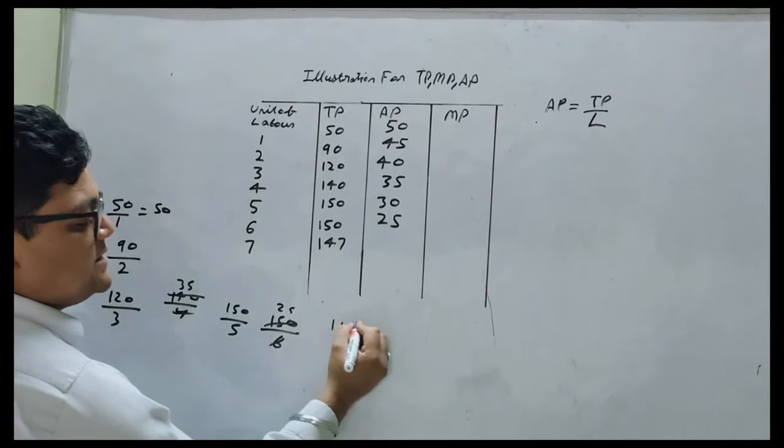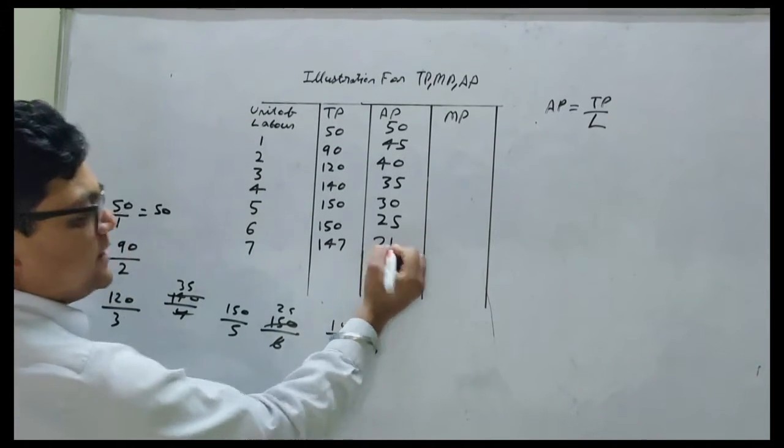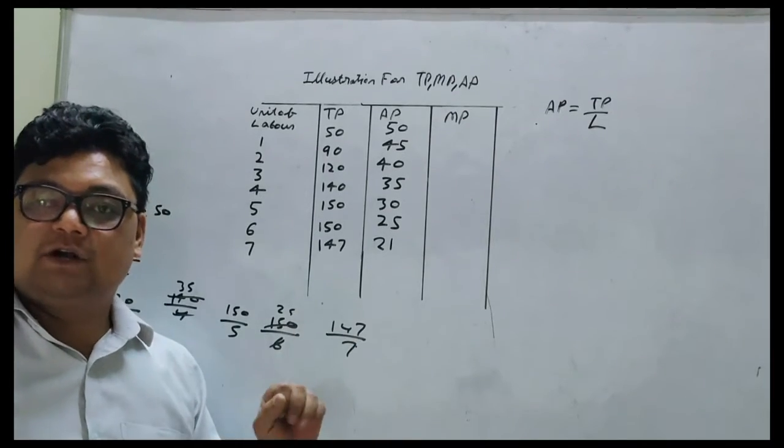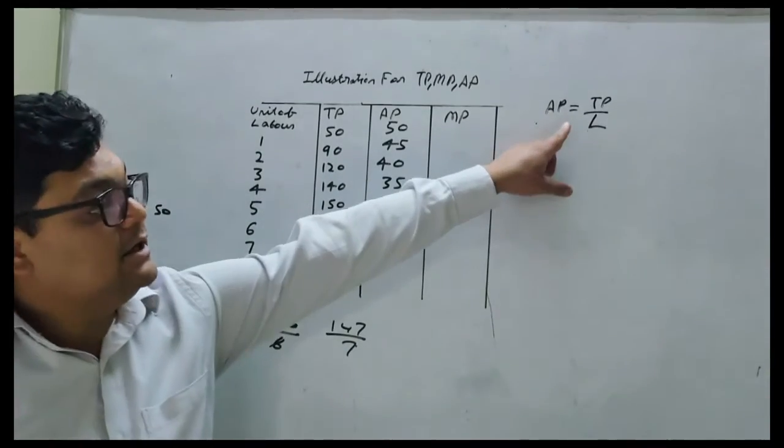So this will be the criteria of finding average product. As we have just divided total product by the labor.